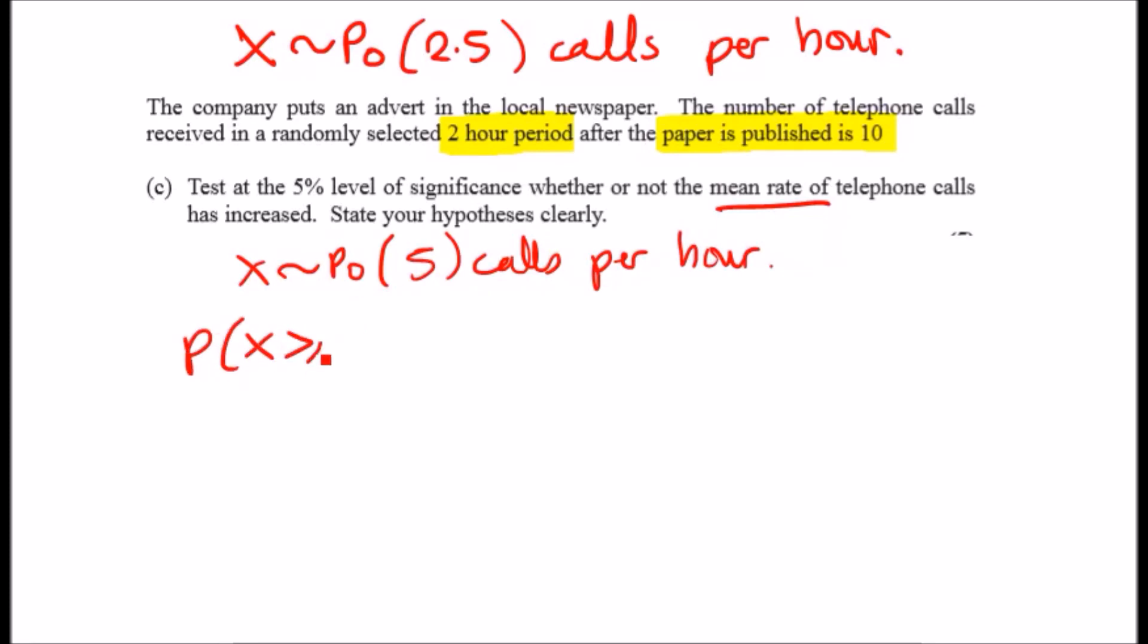Let the null hypothesis and the alternative hypothesis be represented by the mean rate equal to five, or if the mean rate has increased so it would be greater than five. Okay, so this is where we're going. The reason why it's greater than five is because we're testing whether the mean rate of calls has increased from, let's say, five to the published statement of 10.